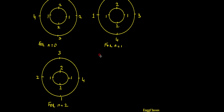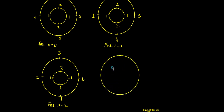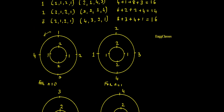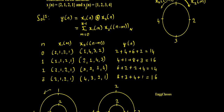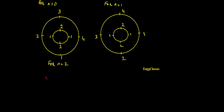The same can be illustrated using the concentric ring approach. The inner ring remains {2, 1, 2, 1} and the outer ring shifts once more to {3, 2, 1, 4} — wait, actually for n=3 we get the final rotation. Multiplying and adding gives 16. Therefore the final answer is: y(n) = {14, 16, 14, 16}, which is the four-point circular convolution result.